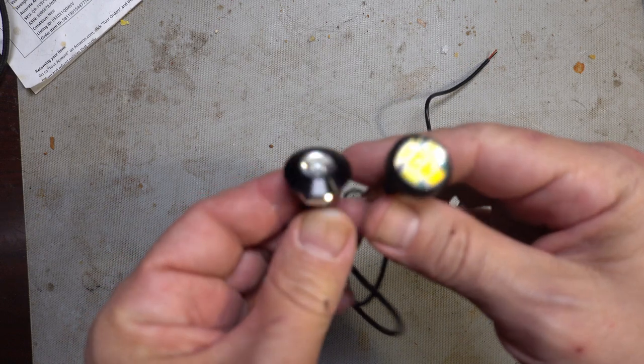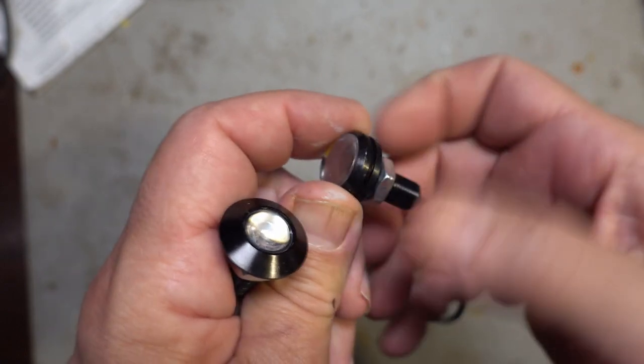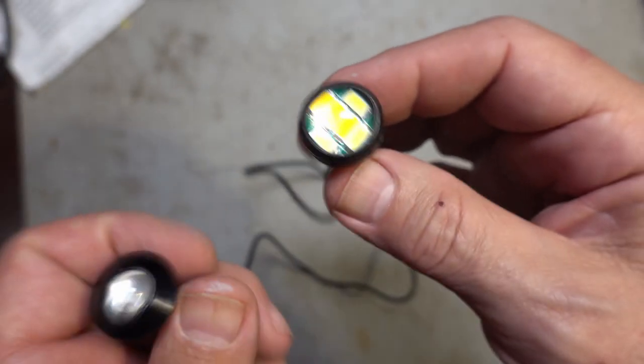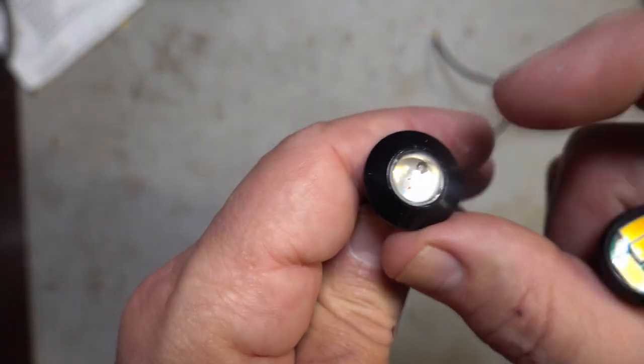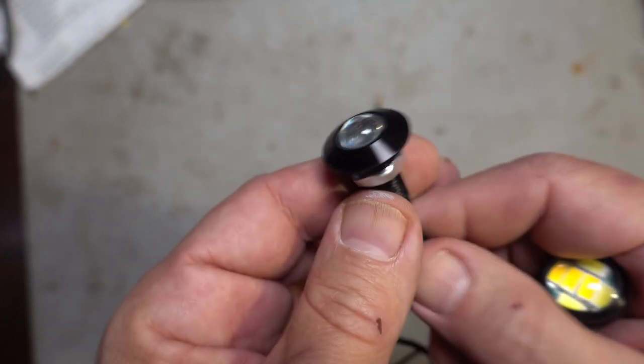These are designed for cars to add as running lights or small indicator lights. This one has two different colors. It's got a white and an amber. And these, I was able to get in various different LED colors. So I think I got red, green, and blue ones.